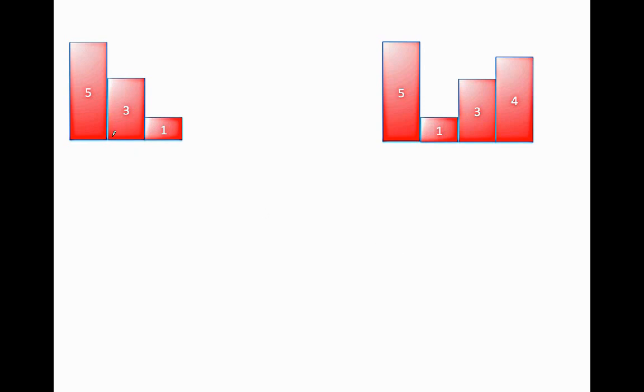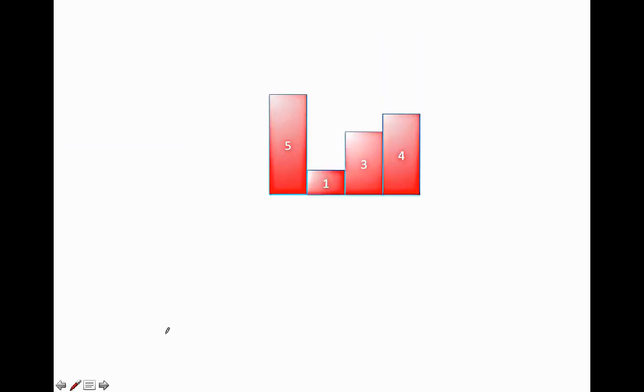It's probably pretty obvious that the one to the left won't hold any water at all, while the one to the right, which may have taken you a little bit longer, will hold about four units of water. So how did you calculate that this bar graph would hold four units of water?